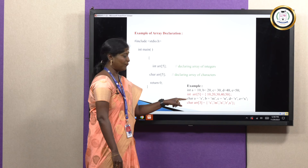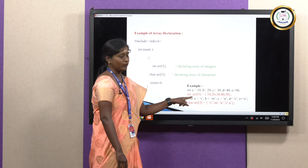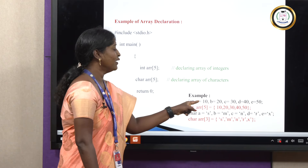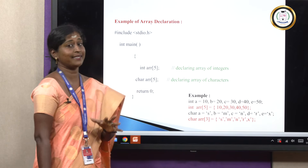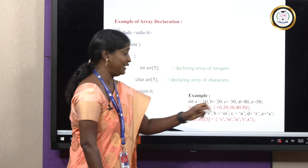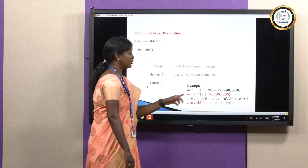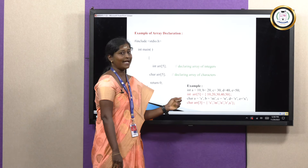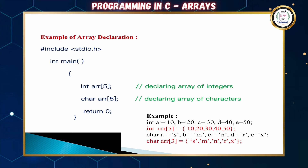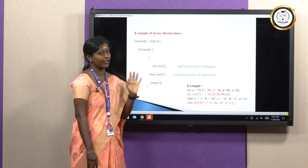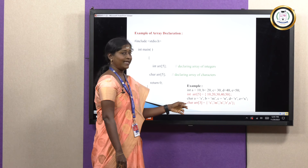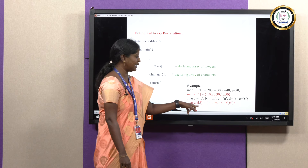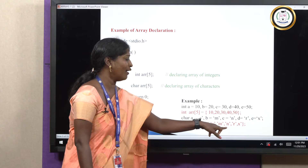For example, normally one value is assigned per variable in C — variables A, B, C, D, E holding 10, 20, 30, 40, 50. In an array, those 5 values can be stored in the same variable ARR using int ARR[5]. Similarly, 5 different characters such as S, M, N, R, X can be stored using char ARR[5].